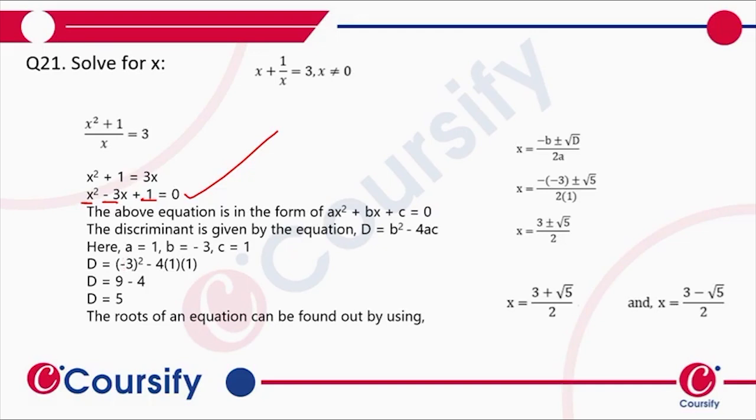That is (-3)² which is 9 minus 4 times a times c, which is 4 times 1 times 1. So 9 - 4 = 5. We'll put it in the formula to find x: -b ± √D / 2a.